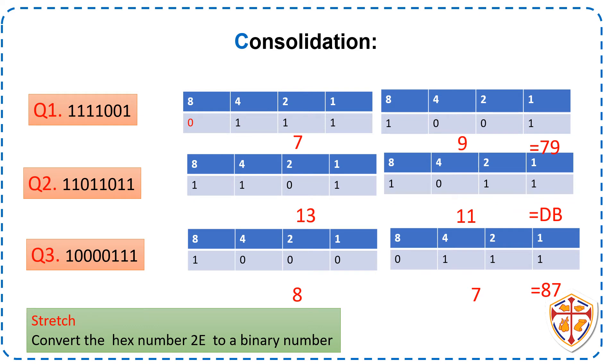Consolidation. Let us recap the steps we have learnt today on how to convert binary numbers to hex numbers. Question 1. We were given a 7 bit binary number. We need 8 bits in order to split them into 2 nibbles. So we need to add a zero in order to get 8 bits.